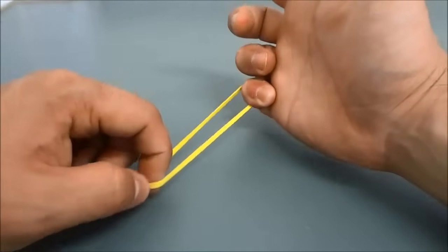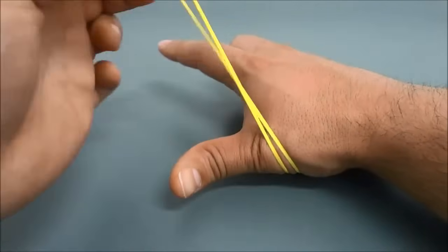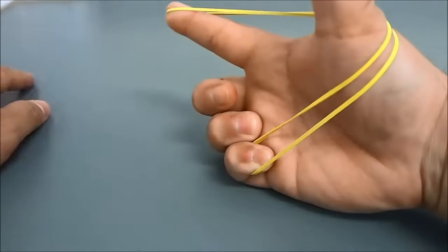Once you have hooked it closed, you can pull on the rubber band, bring it across your palm and then over your thumb, the edge of your thumb, and then hook it onto your index finger that is sticking out just like that.